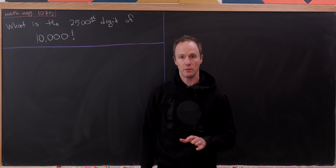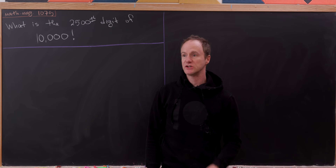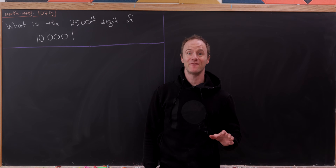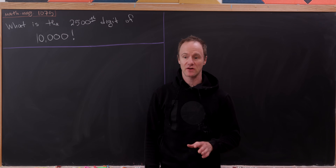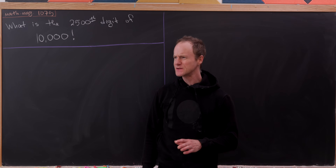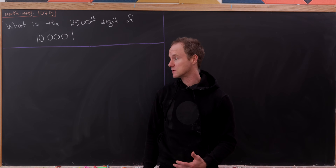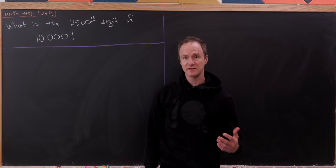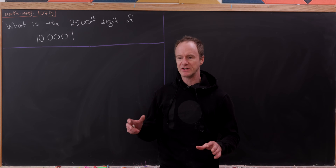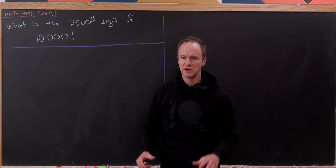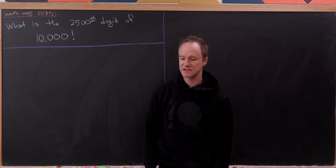Let's check out this nice factorial problem. Our goal is to determine the 2,500th digit of 10,000 factorial. This problem seems like it would be nearly impossible, but in fact, 10,000 factorial and 2,500 have been chosen so that they work nicely together in this context.